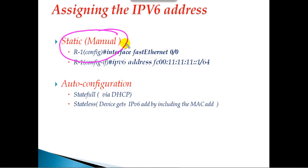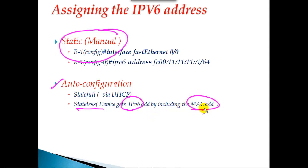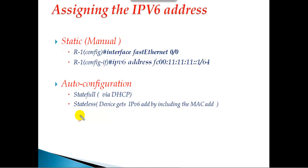In this section our main focus will be on static manual configuration. Inside auto configuration there is one new method called stateless auto configuration, where the device gets the IPv6 address automatically by including its own MAC address. We'll go into more detail about stateless auto configuration in the next section.